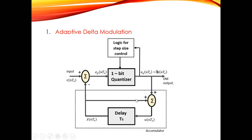In the ADM transmitter block diagram, it is the same as the delta modulator with one addition: one more block called 'logic for step size control' is added. The DM output is given to the logic for step size control, and that is given to the one-bit quantizer. Otherwise this is the delta modulator system with the one addition of the logic for step size control block. The step size is controlled using this block - whenever it is required to increase the step size, it is done automatically.